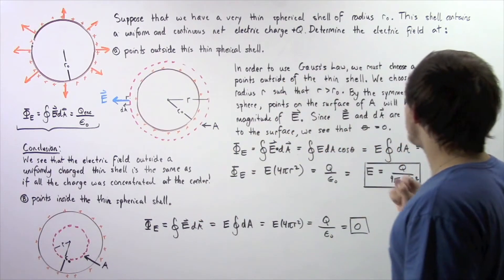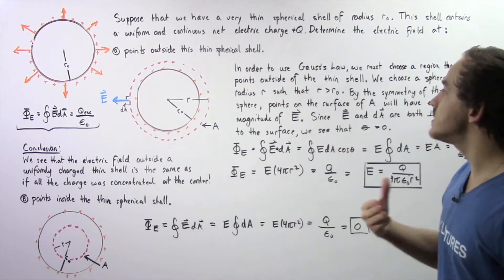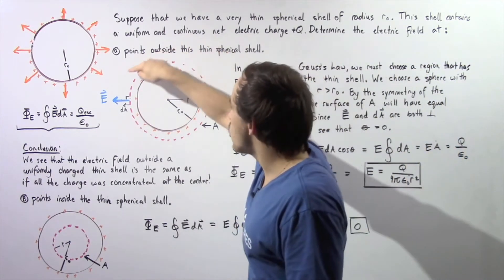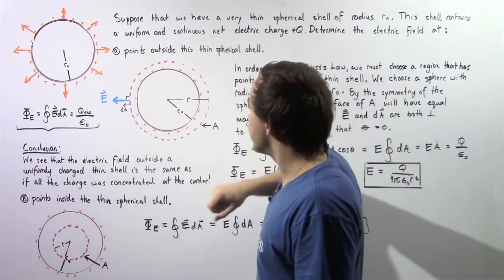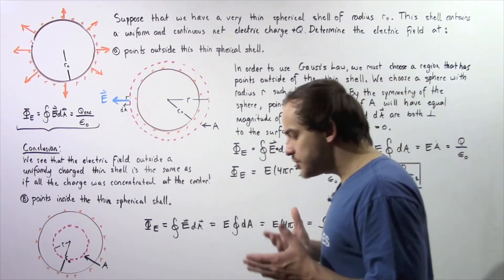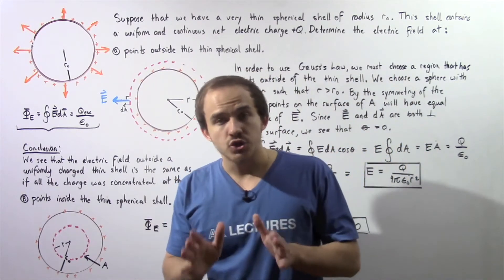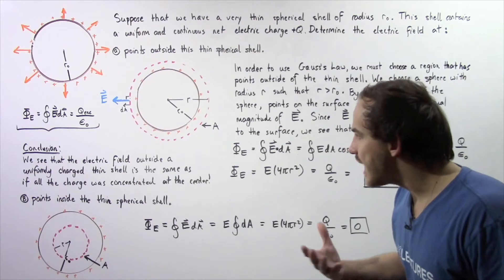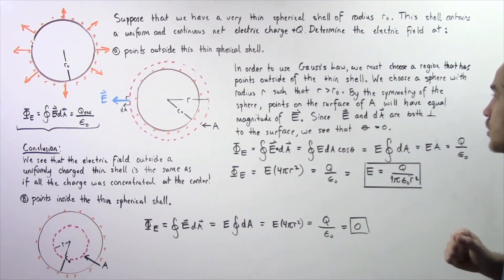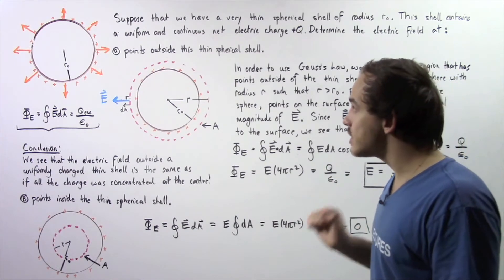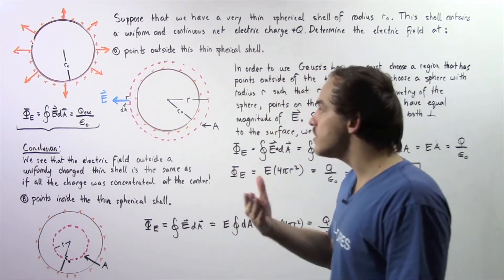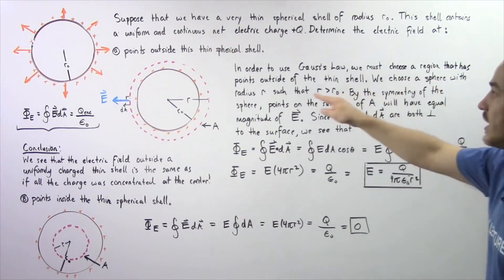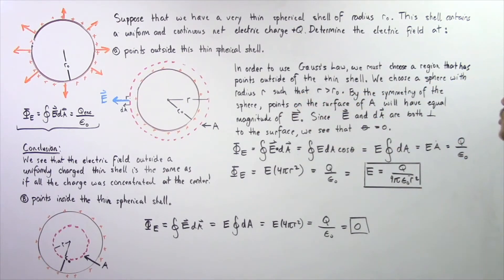We choose a region that contains points outside the thin spherical shell. One such region is shown by the red dashed line — call this region A. Region A is a sphere, and we choose a sphere because spheres are symmetrical, which will help simplify our problem. We choose this sphere with radius R such that R is greater than the radius R₀ of the thin spherical shell.